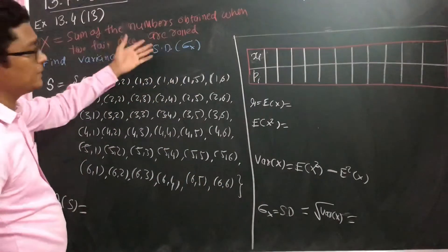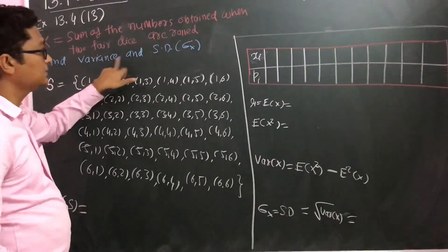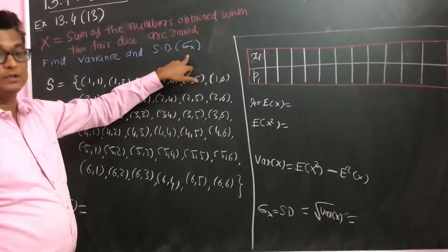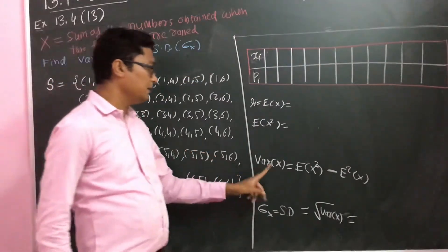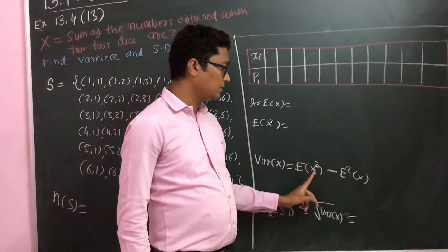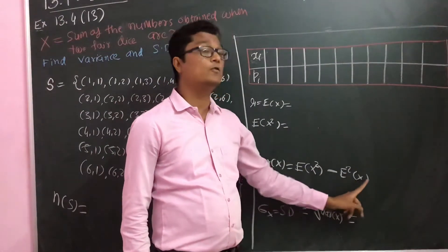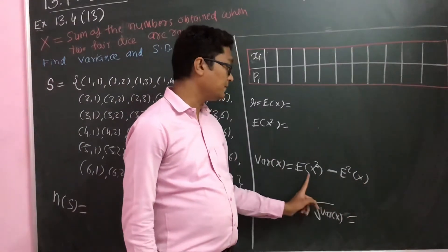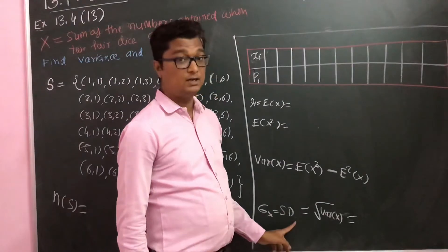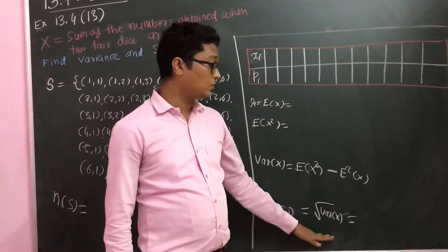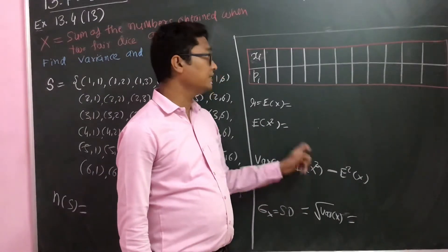Here we have X as a random variable, and we have to find out its variance and standard deviation. To find variance, the equation is expectation of X square minus the expectation square of X. And if I want to find standard deviation, it is the square root of variance of X. So these two equations are required.